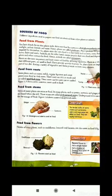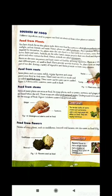Let's start reading. Sources of food. Different ingredients used to prepare our food are obtained from either plants or animals. The food that we eat comes from either plants or animals. In this video, we will discuss the food that we eat from plants.